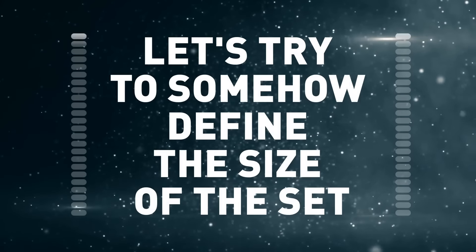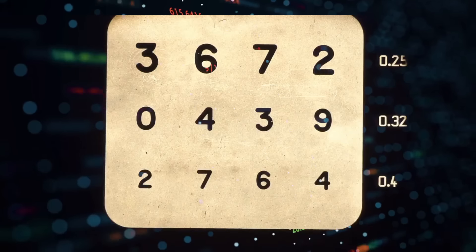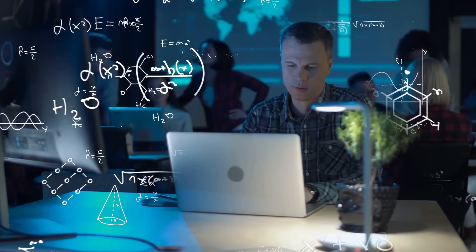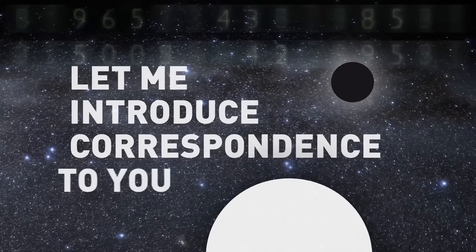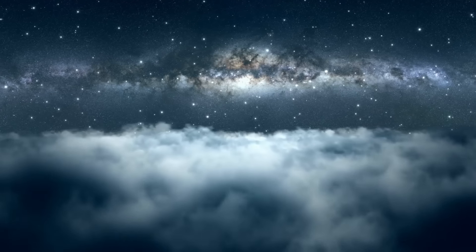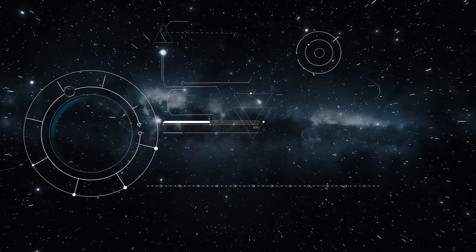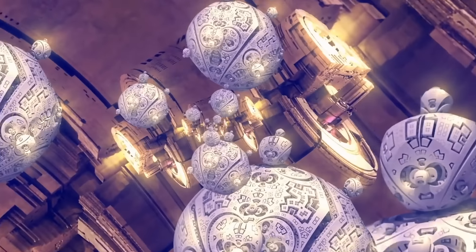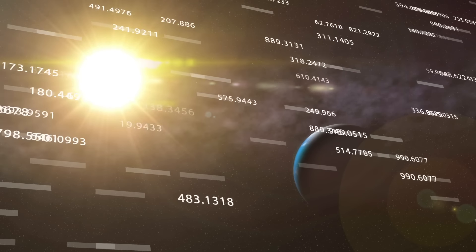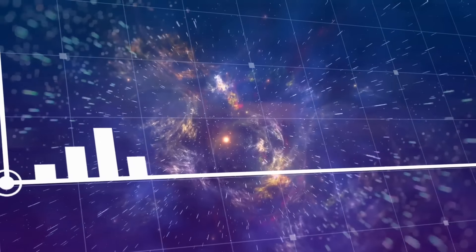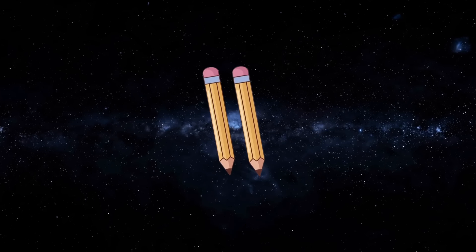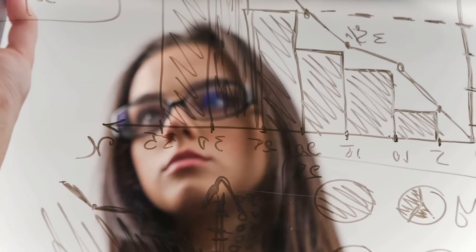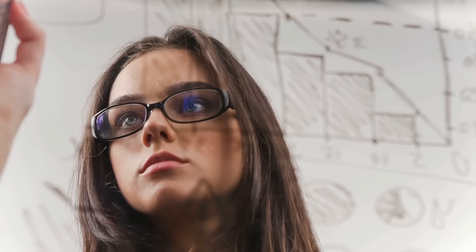Let's try to somehow define the size of the set. It's easy to understand that the size of a set of finite elements is simply the number of these elements. But how should we think about the size of infinite sets? Let me introduce correspondence to you. This is a concept in set theory that functions by relating one individual object in one set to another individual object in another set. These individual objects can be some items or just numbers. The main thing is that each item in one set can be compared to an item in another set.